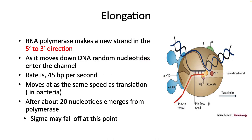Elongation then proceeds out from the open complex in a 5' to 3' direction. Bases are added one at a time, again being picked randomly out of the solution. The rate of RNA polymerase is 45 base pairs per second, which is much slower than DNA polymerase, but this matches the speed of translation. After inserting about 20 nucleotides, sigma may fall out of the complex.